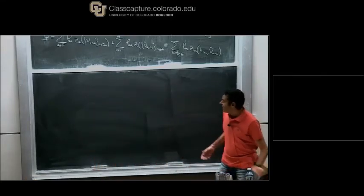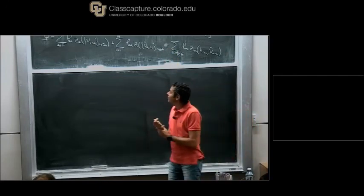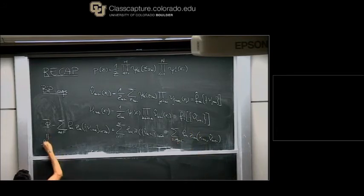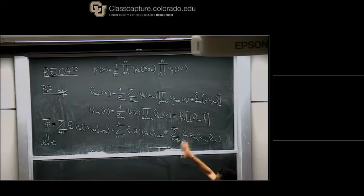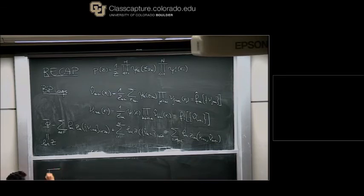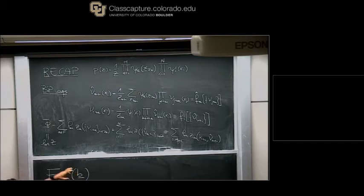Let me start the second lecture with a recap of the main equations. Our problem is estimating Z and the marginals of a joint probability distribution of n variables of any kind. We derived two equations which we call the belief propagation equations — first on a tree, then we realized the same equations arise by imposing extremality of the Bethe free energy as a function of the beliefs. The extremal point of this functional satisfies the BP equation.